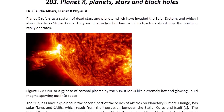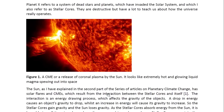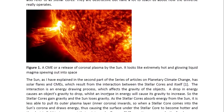Here we see a CME, or release of coronal plasma by the sun, and it looks like extremely hot and glowing liquid plasma spewing out into space. The sun, as I have explained in the second part of the series of articles on planetary climate change, has solar flares and CMEs which result from the interaction between the stellar course and itself.